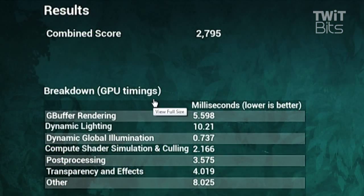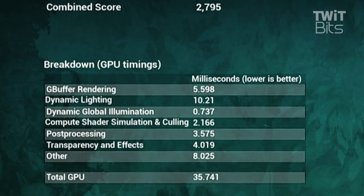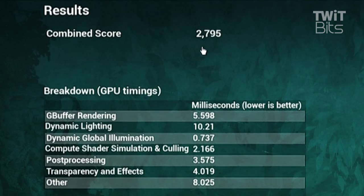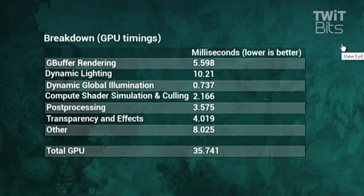The combined score output is actually just your frame rate times 100 — so 27.95 was the average frame rate of that particular run. But all those other timings are really interesting if you want to dive into the nitty-gritty of what the tech is actually doing.